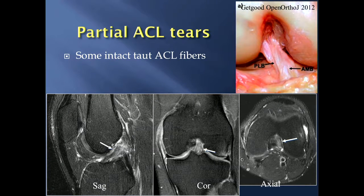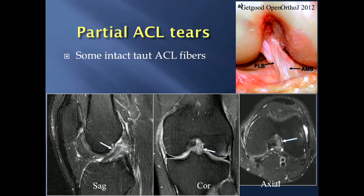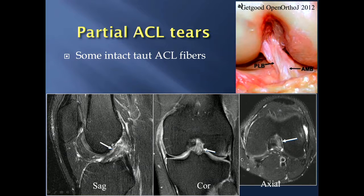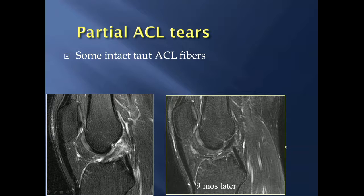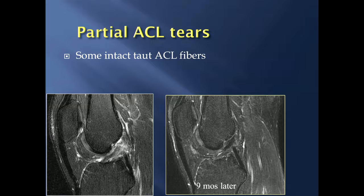Partial ACL tears imply that some intact fibers remain taut. These can be tricky, as their appearance sometimes overlaps with complete ACL tears. In one example, the ACL looked a little wavy with diffuse increased signal but no fluid gap — not a definitive sign. This same patient nine months later showed a healed ACL. Complete ACL tears do not heal, but partial tears, because some intact fibers act as scaffolding, can heal — as happened in this case.